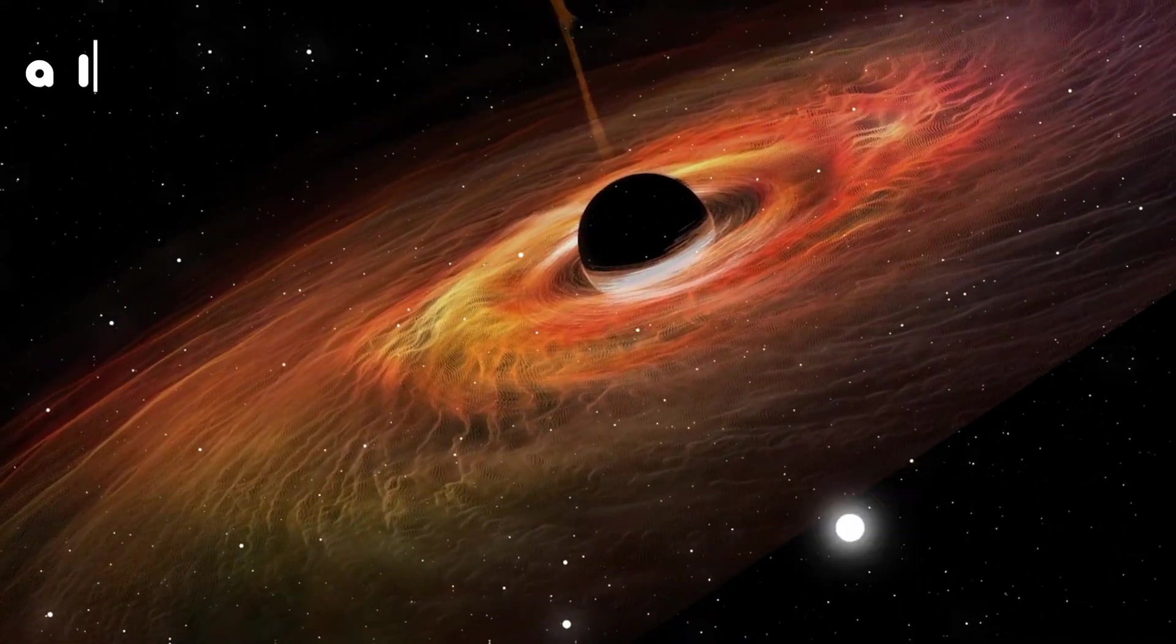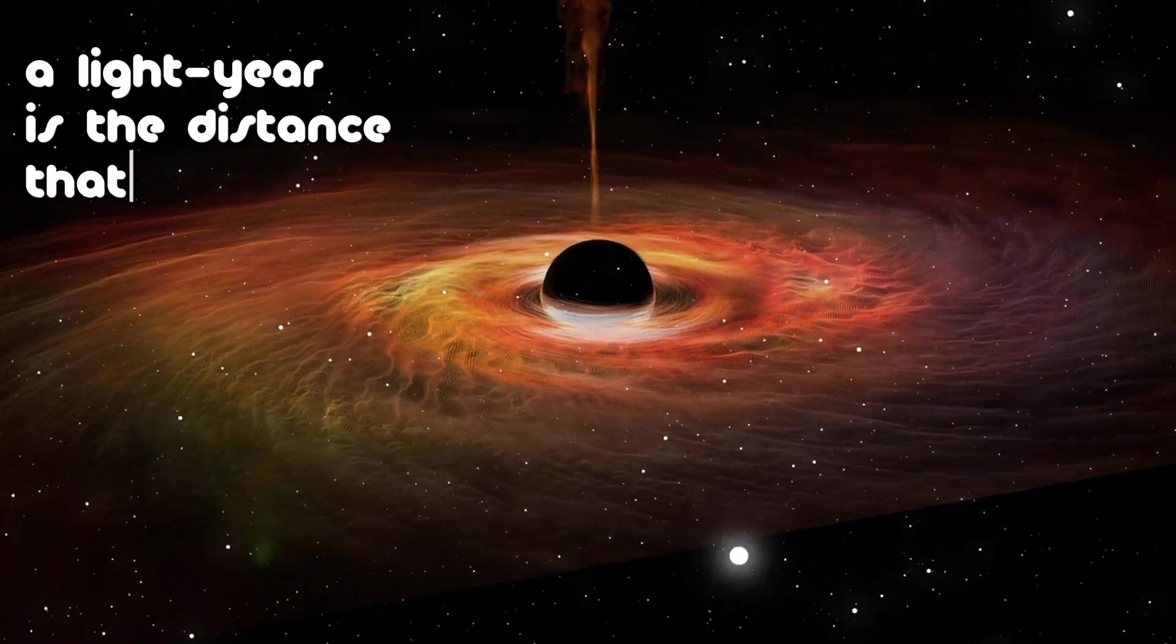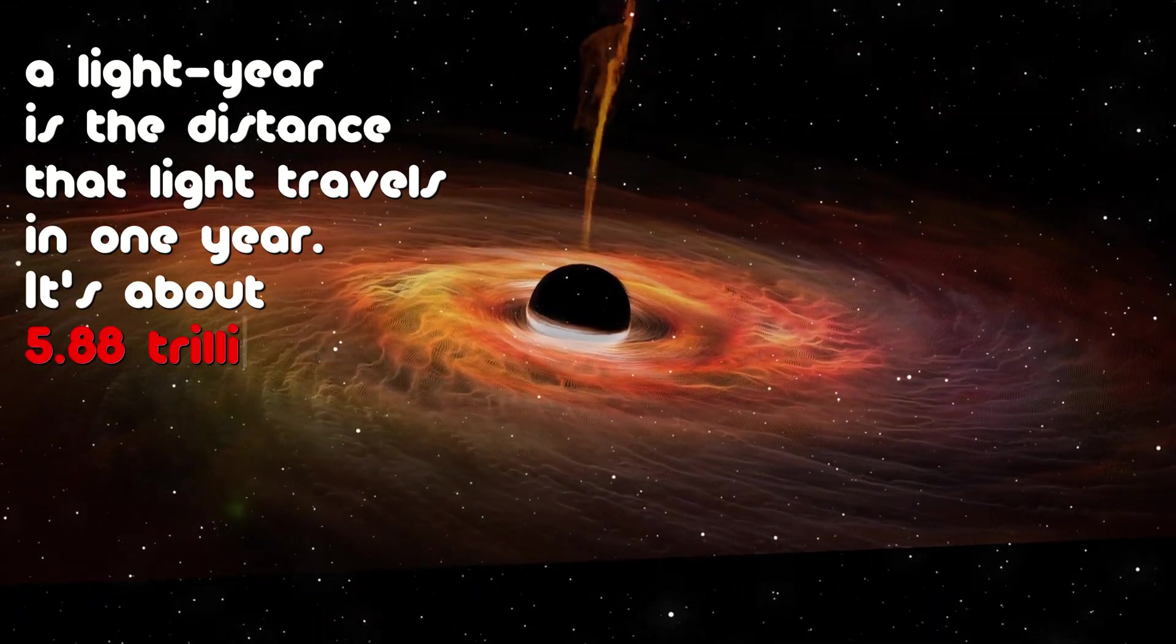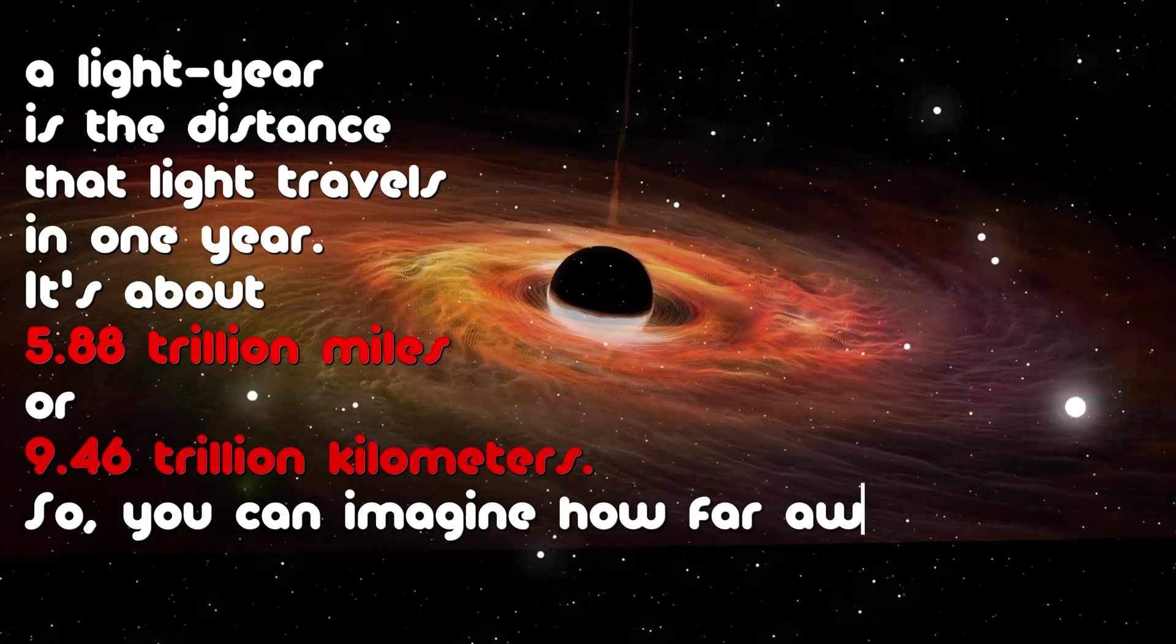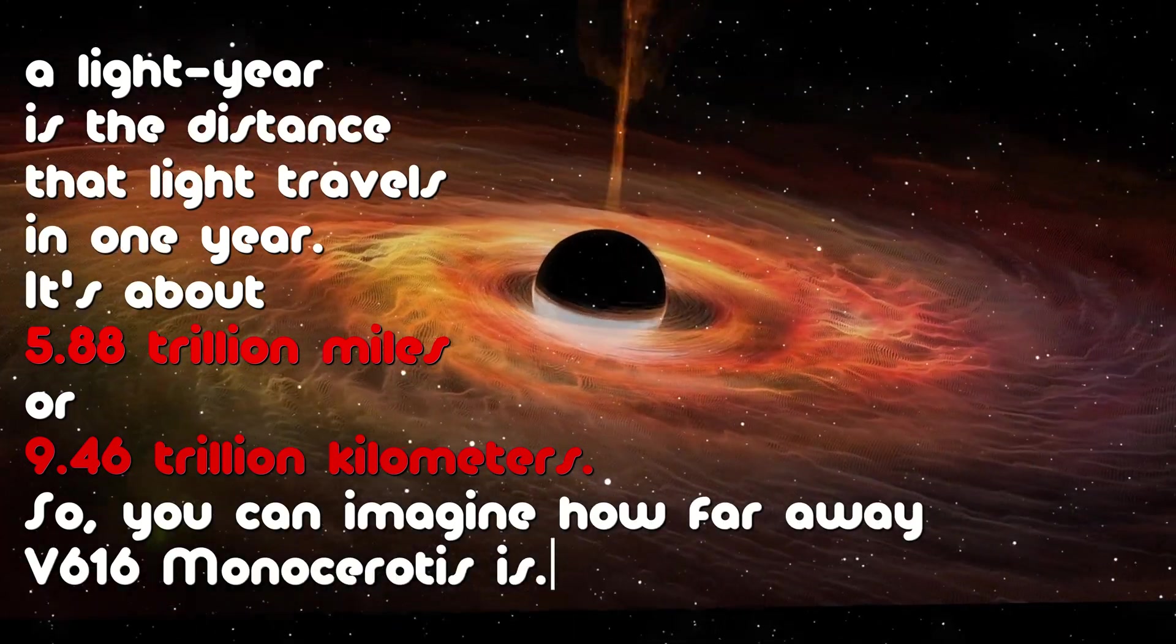By the way, a light year is the distance that light travels in one year. It's about 588 trillion miles or 9.46 trillion kilometers. So you can imagine how far away V616 Monocerotis is.